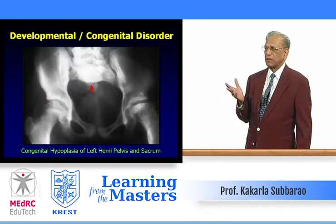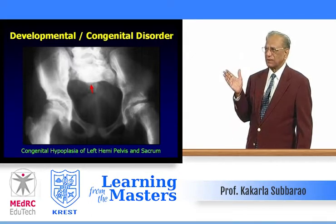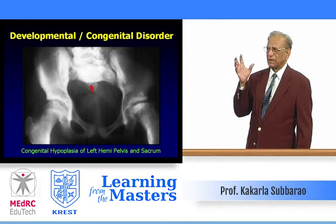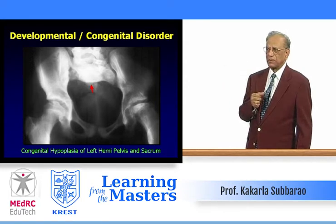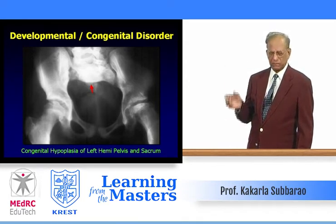Congenital hypoplasia of the left hemipelvis — look at the asymmetry between the right and the left. This is atrophy of the hip bones, the innominate bones, and partial absence of the sacral bones. This is all congenital developmental disorder.